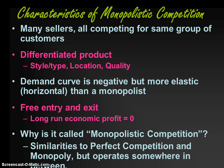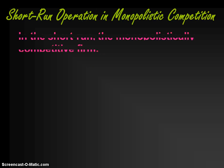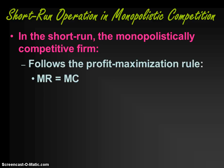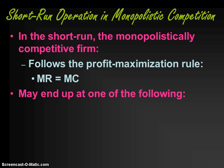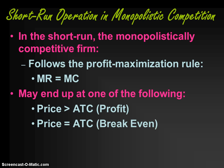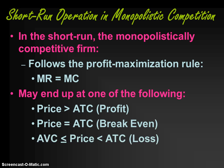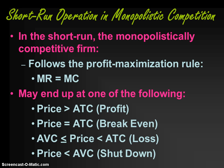Why is it called monopolistic competition? Because there are similarities to both perfect competition and monopoly — it's somewhere in between the two, though closer to perfect competition. In the short run, the monopolistically competitive firm follows the profit maximization rule: always produce where MR equals MC. In the short run, a monopolistic competitor may end up earning profits, breaking even, losing money but continuing to operate because they can cover variable costs, or shutting down immediately because they can't cover variable costs — the same four options as perfect competition.